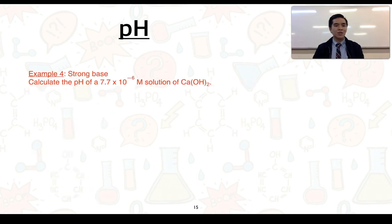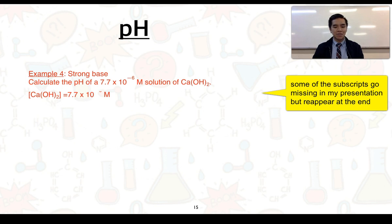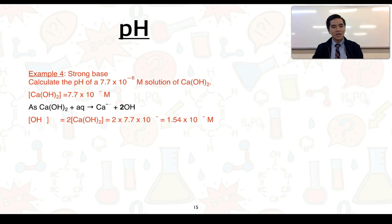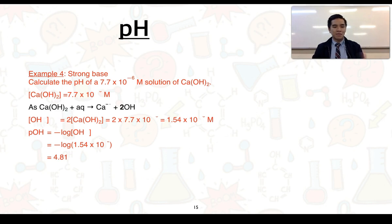Example 4 involves a strong base: calculate the pH of a 7.7 × 10⁻⁶ molar solution of calcium hydroxide. Since calcium hydroxide dissociates to give two hydroxide ions per formula unit, [OH⁻] equals 2 × 7.7 × 10⁻⁶ = 1.54 × 10⁻⁵ mol/L. Substituting into the pOH formula gives 4.81, and rearranging pH = 14 − 4.81 gives a pH of 9.2 to two significant figures.